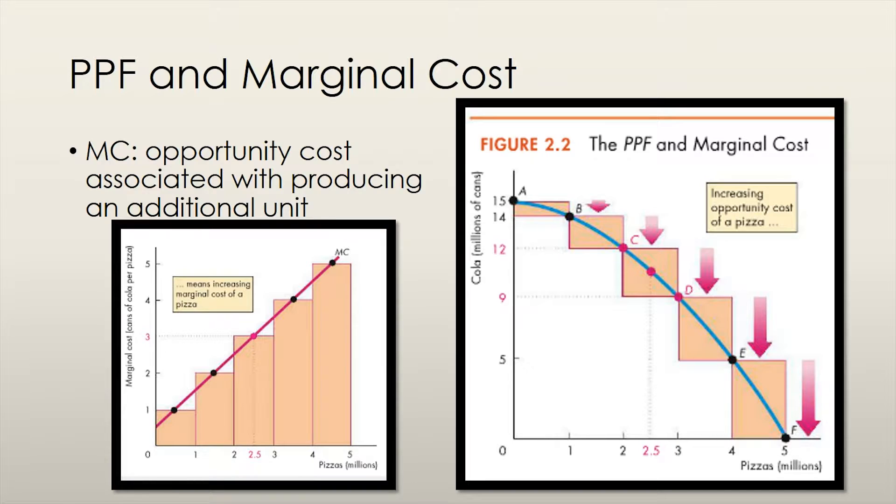We can do this calculation for every point on the PPF, and we can graph all the values we get for marginal cost. As you can see on the graph to the left, marginal cost is increasing. This is based on the premise that we have to give up more and more cola each time we want to produce an additional unit of pizza.